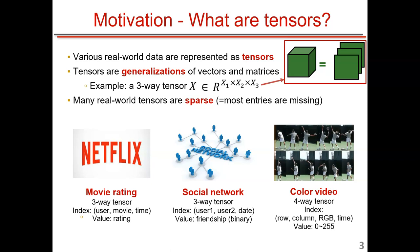There can be another tensor for social networks, which indicates the friendship between users. There can also be a color video tensor — for example, a tennis player serving the ball — which is a four-way tensor with four axes: row, column, RGB channels, and time frame. The values represent pixel intensity.